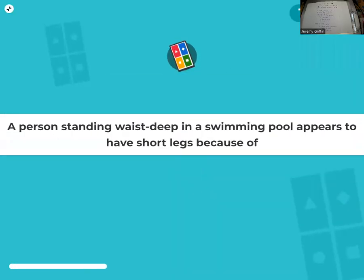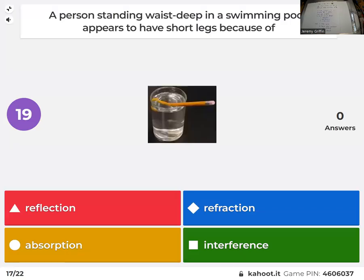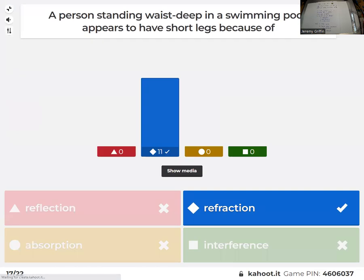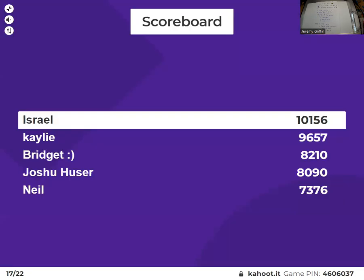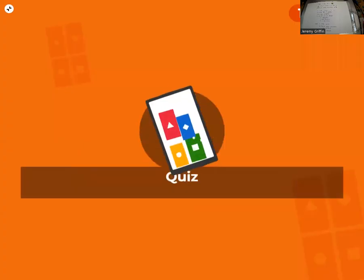A person stands waist deep in a swimming pool, appears to have short legs because of refraction. Never bothered getting points.